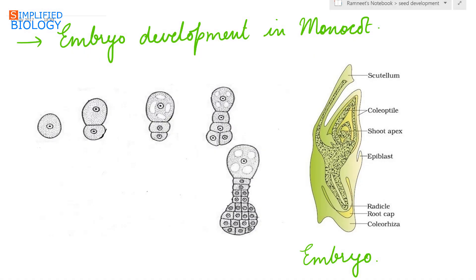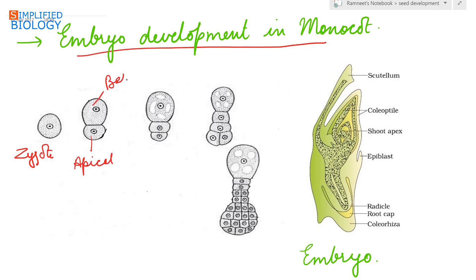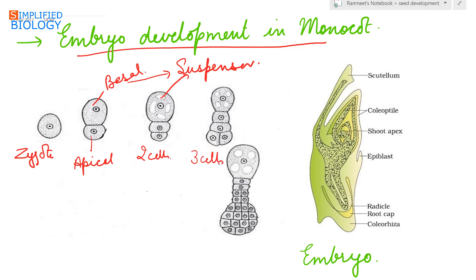Next, embryo development in monocots. The starting is the same — the zygote first divides transversely to produce two cells: the inner apical cell and the outer basal cell. The basal cell does not divide further but increases in size to form the suspensor. The apical cell first divides transversely to form two cells, which then divide forming three cells. The terminal cell forms the globular structure that will develop into the cotyledon, below which the second cell forms the plumule, and the third forms the radicle.